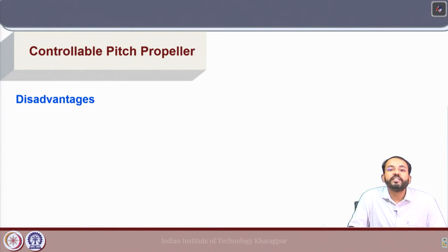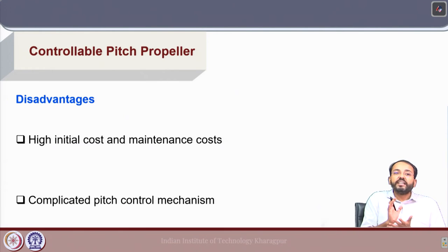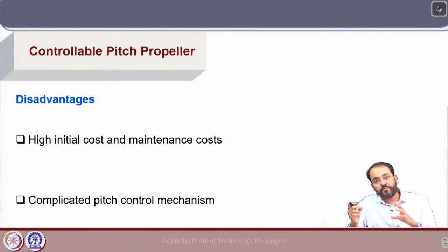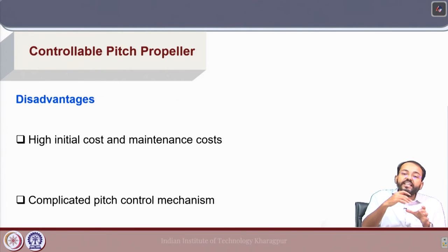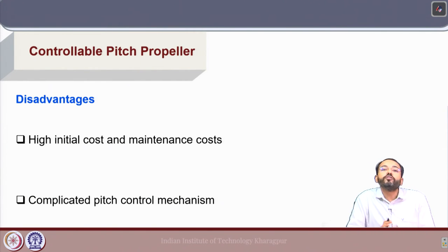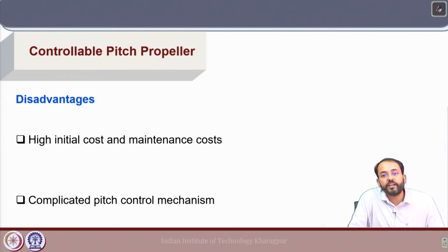There are also some disadvantages to consider before applying controllable pitch propellers. The first is the high initial cost and maintenance cost due to a complicated pitch control mechanism, which requires a hydraulic mechanism and connection to the propeller shaft. Each blade needs to be manufactured and attached to the hub separately, making the entire mechanism quite complex. The economics for the particular vessel operation need to be examined when designing a controllable pitch propeller.